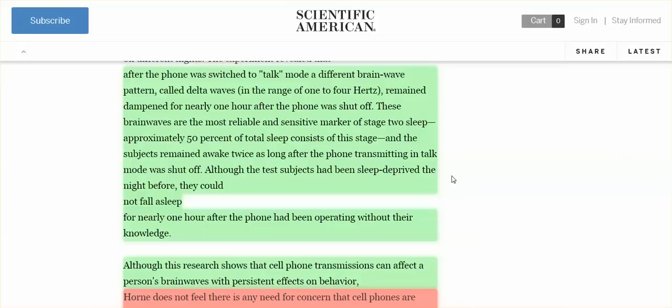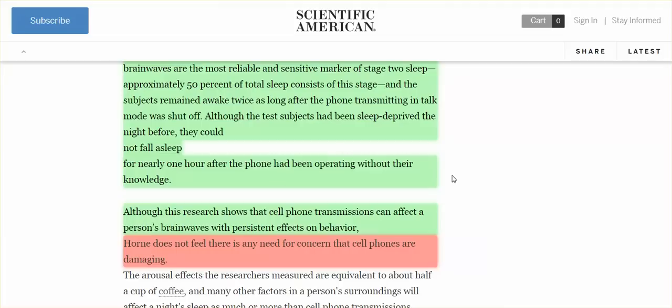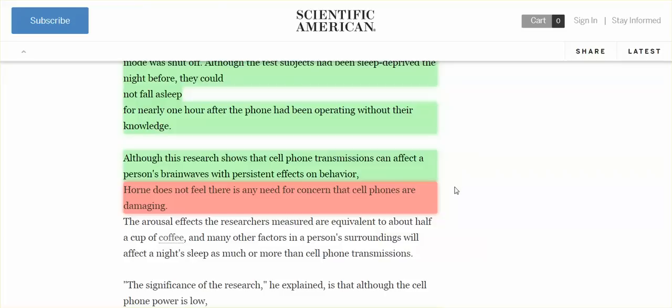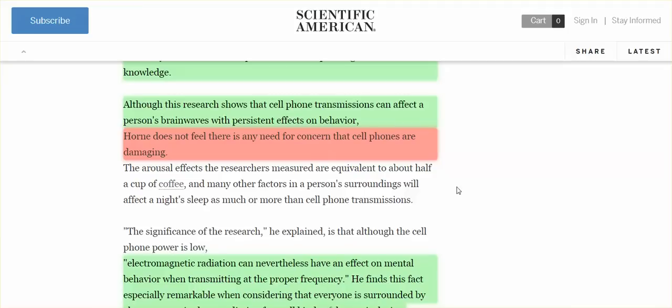These brain waves are the most reliable and sensitive marker of stage 2 sleep. Approximately 50% of total sleep consists of this stage, and the subjects remained awake twice as long after the phone transmitting in talk mode was shut off. Although the test subjects had been sleep deprived the night before, they could not fall asleep for nearly one hour after the phone had been operating without their knowledge. Although this research shows the cell phone transmissions can affect a person's brain waves with persistent effects on behavior.